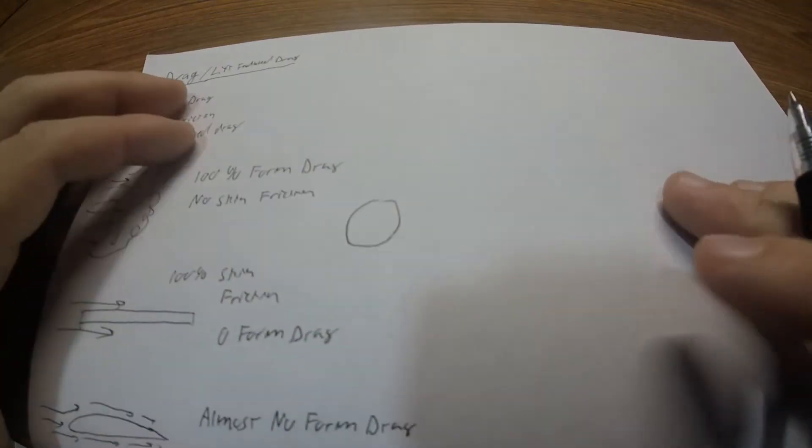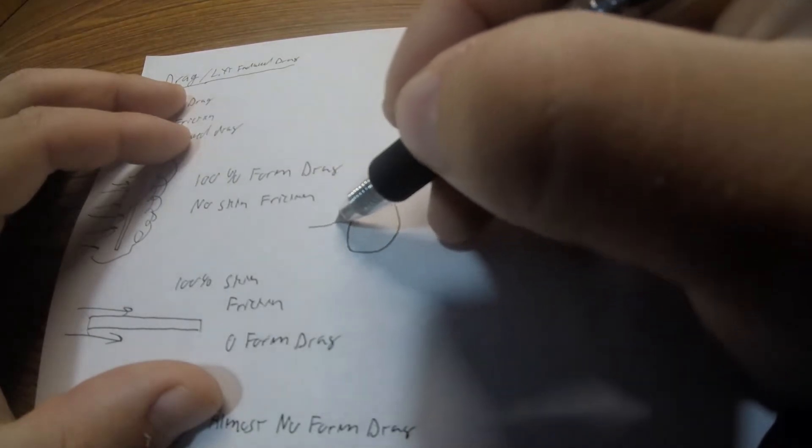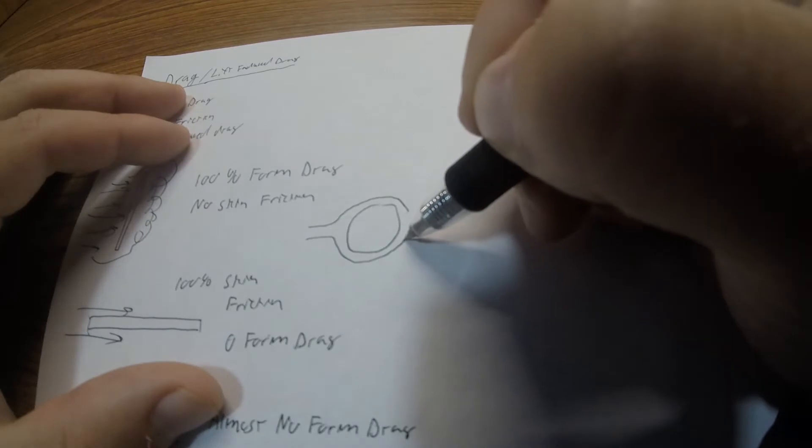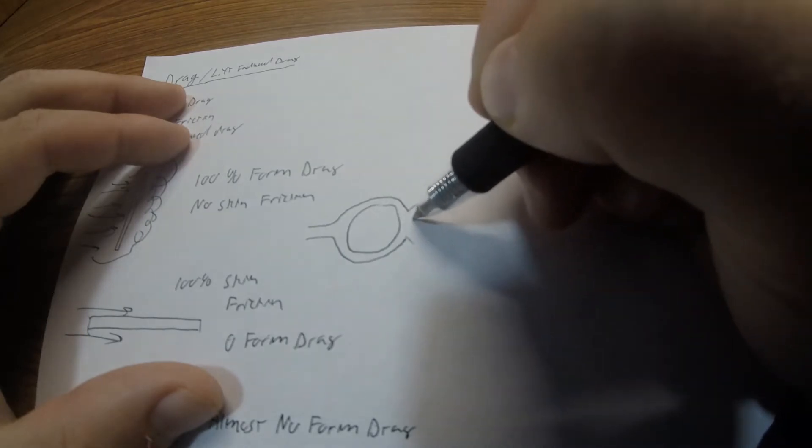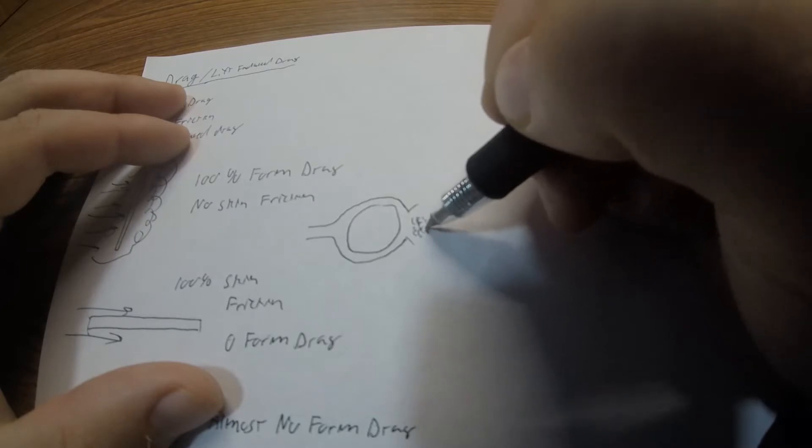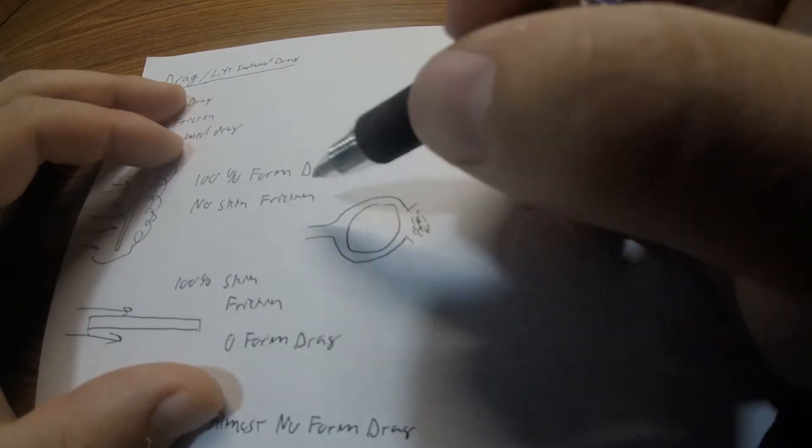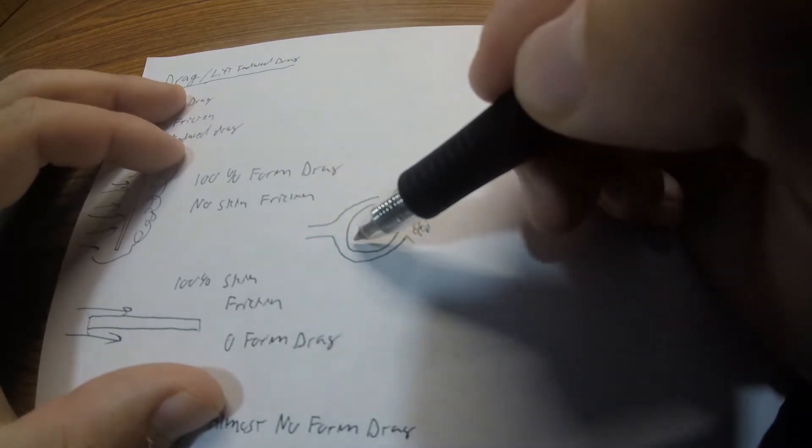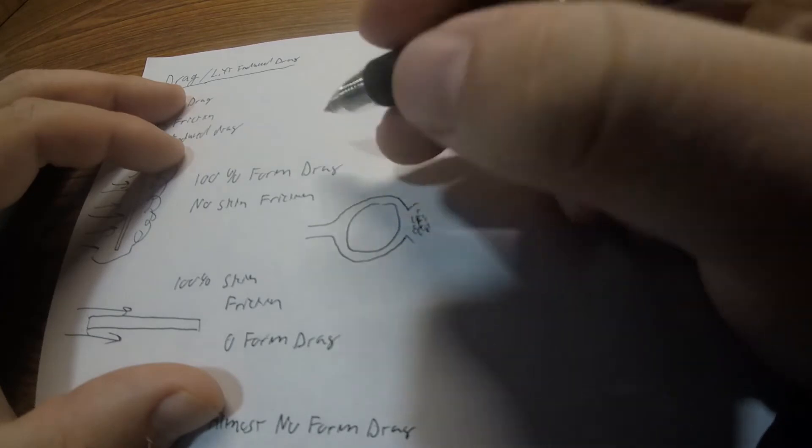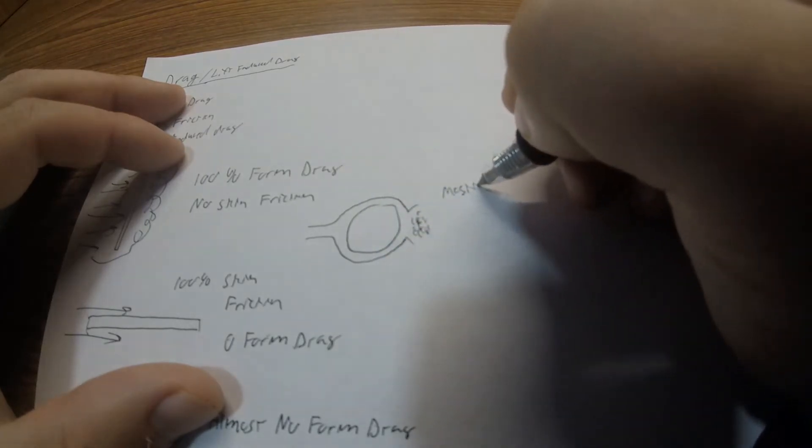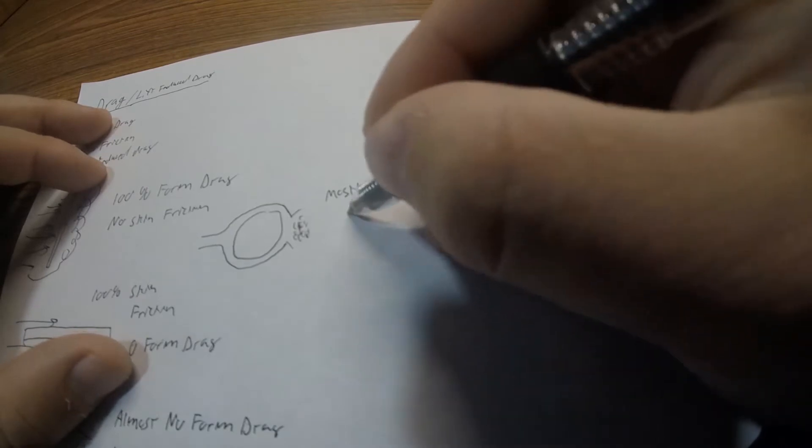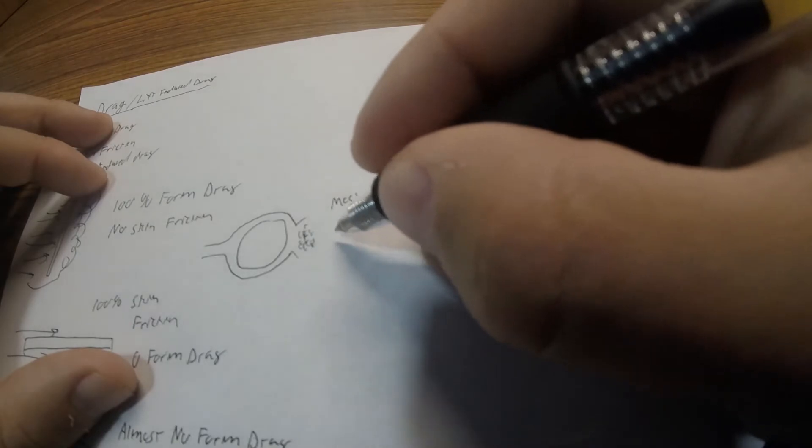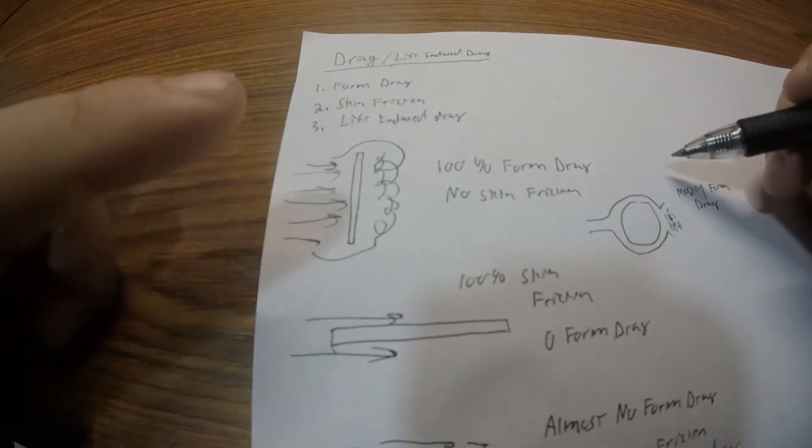Then we can consider, let's say, a ball or a sphere or something like that. So now the air is traveling around it more, but there's still some, but the air is still going to break off into vortices. There's going to be a low pressure system back here. Now, because the air is traveling or the fluid is traveling more along the ball, this is going to be still mostly form drag. But now there's more skin friction in this scenario versus like this scenario.